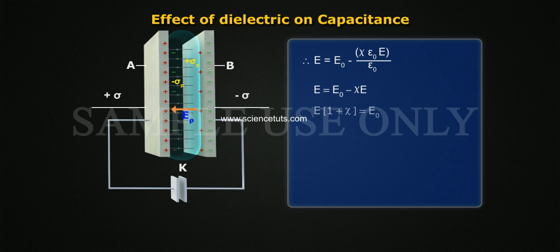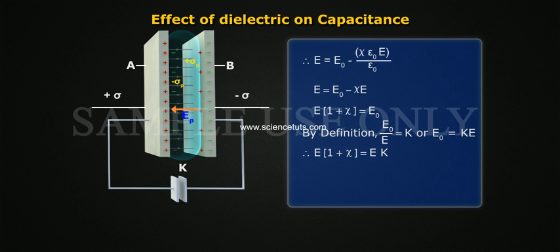E of 1 plus psi equals E naught. By definition, E naught by E equals K, or E naught equals K E. Therefore, E of 1 plus psi equals E K, so K equals 1 plus psi. For air or vacuum, psi equals 0, therefore K equals 1.